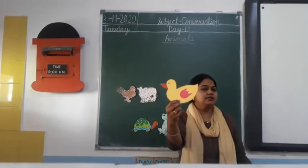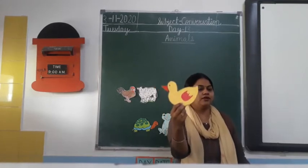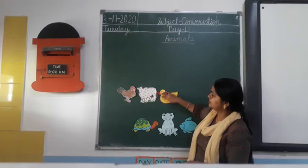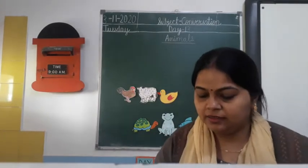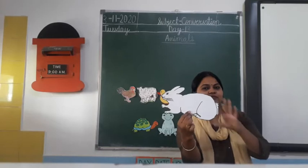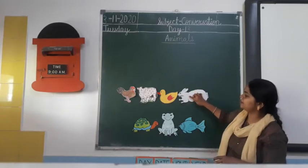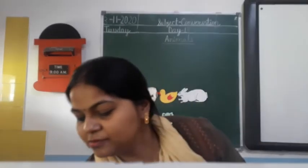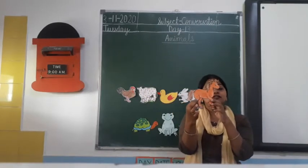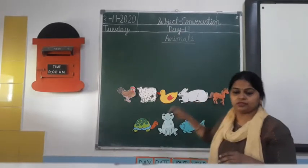What is this? This is a duck. What is the sound of a duck? Quack quack. It lives in a pond or river. Duck is also a farm animal. What is this? Rabbit. What is the color of this rabbit? White. And what is this? Horse. We also take horse rides. Horse is also a farm animal.